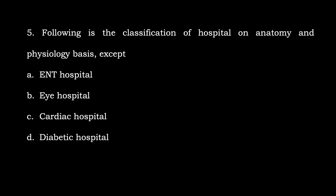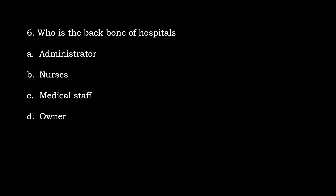Question number five: Which of the following is not a classification of hospital on the basis of anatomy and physiology? The options are: A) ENT hospital, B) Eye hospital, C) Cardiac hospital, D) Diabetic hospital. ENT stands for Eye, Nose and Throat. ENT hospital, Eye hospital, and Cardiac hospital all come under anatomy and physiology classification, but Diabetic hospital does not. So the correct option is D, diabetic hospital.